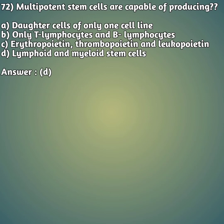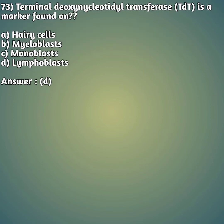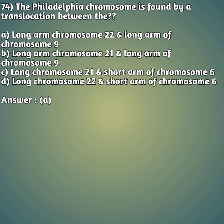Moving on to our 73rd question: terminal deoxynucleotidyl transferase (TdT) is a marker found on - option A: hairy cells. Option B: myeloblasts. Option C: monoblasts. Option D: lymphoblasts. The right answer is answer D - TdT marker is found on lymphoblasts.